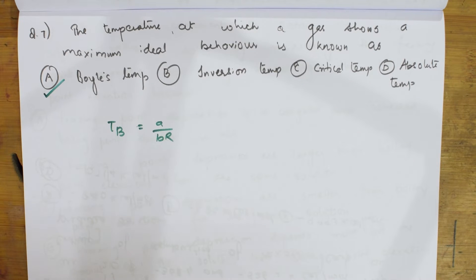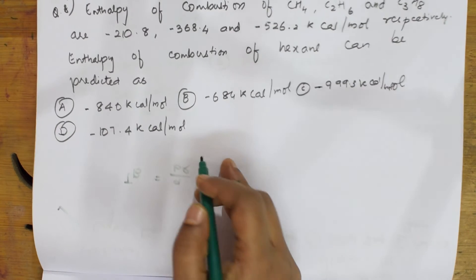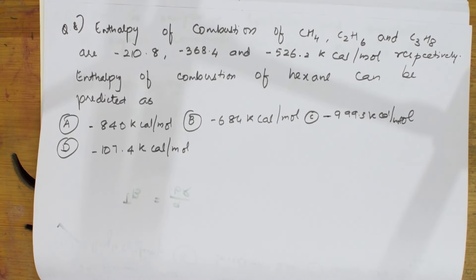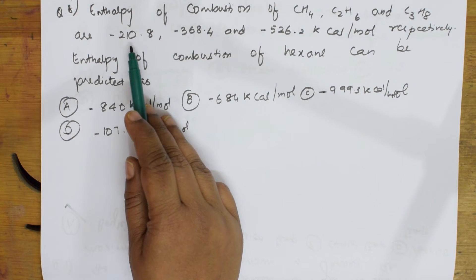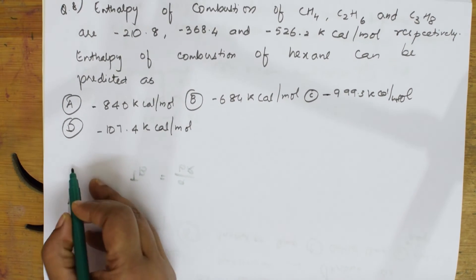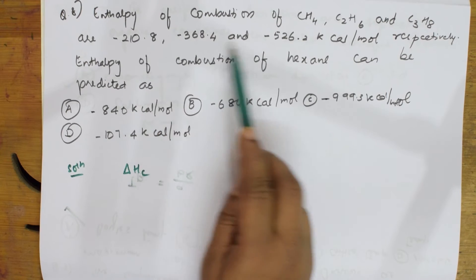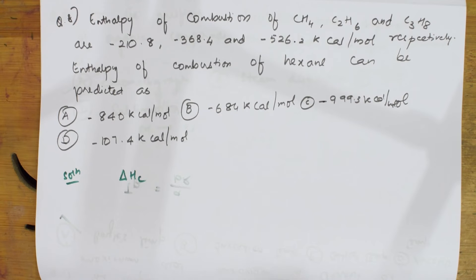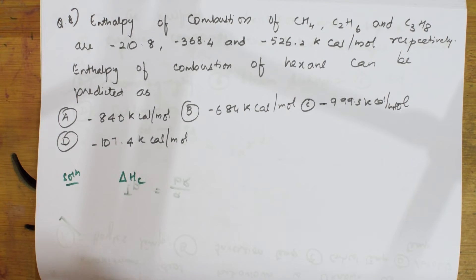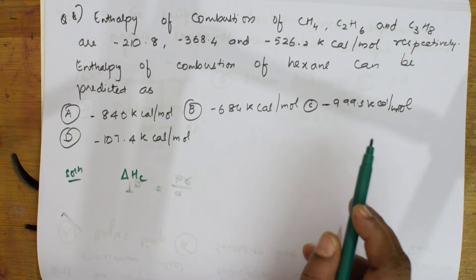Let's do the next question — a Grade 11 question. They give us the enthalpy of combustion of methane, ethane, and propane, denoted by ΔH_c, with their respective values. From these, we have to predict the enthalpy of combustion of hexane.